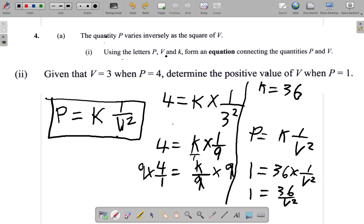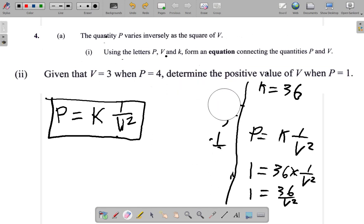Let me make some space. And continue using this space. So we have 1 equals 36 over V squared. Now, this is the same as 1 over 1. So I have fraction on both sides.